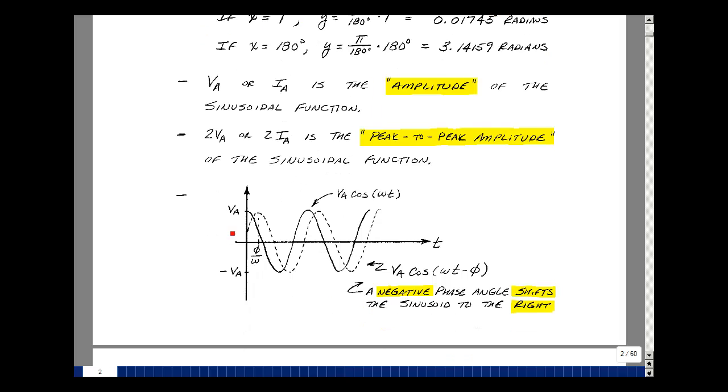Here I've sketched v sub a times the cosine of omega t, it's the dark line over here. Sketch the same cosine function, but with a phase angle of minus phi. When you have a negative phase angle, it shifts the waveform to the right. That's the dotted line that's here. If you have a positive phase angle, it shifts the waveform to the left. This is important when we're in lab and taking measurements to see whether our angle is positive or negative.